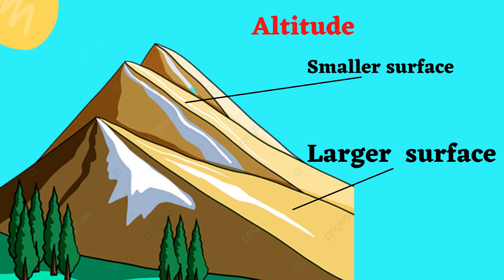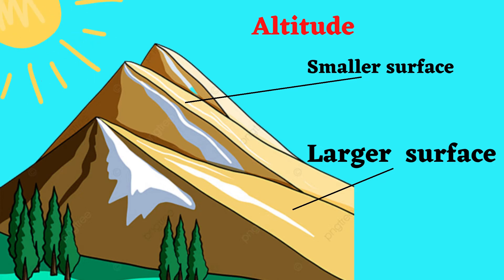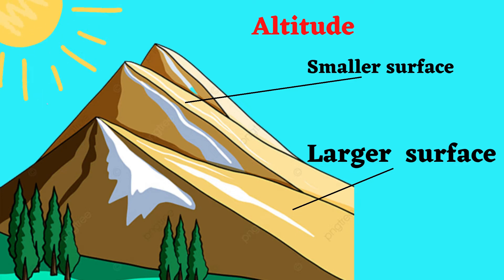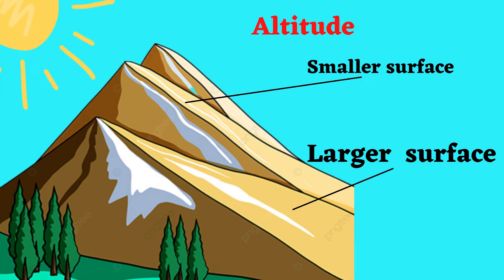The less solar energy which can be received means that places at a lower altitude will receive more radiation than places at higher altitudes.